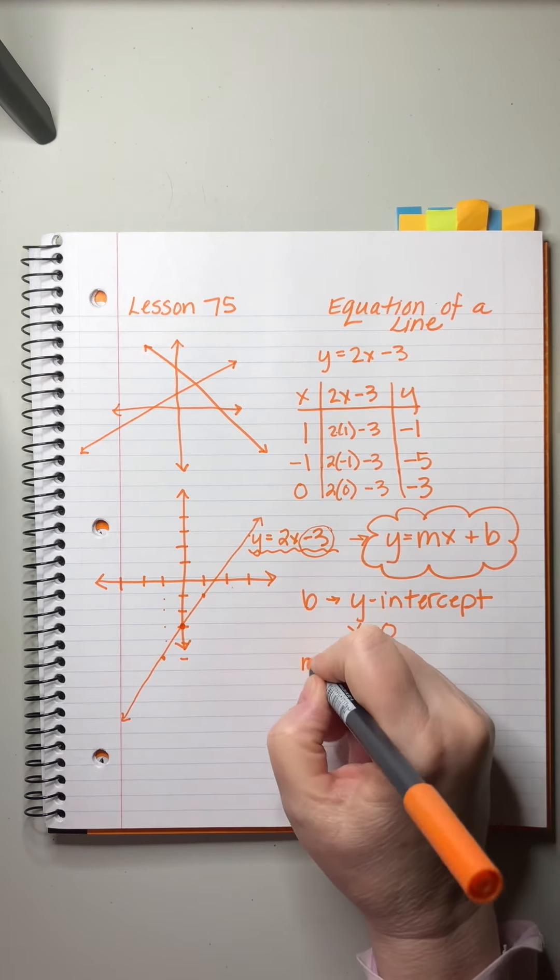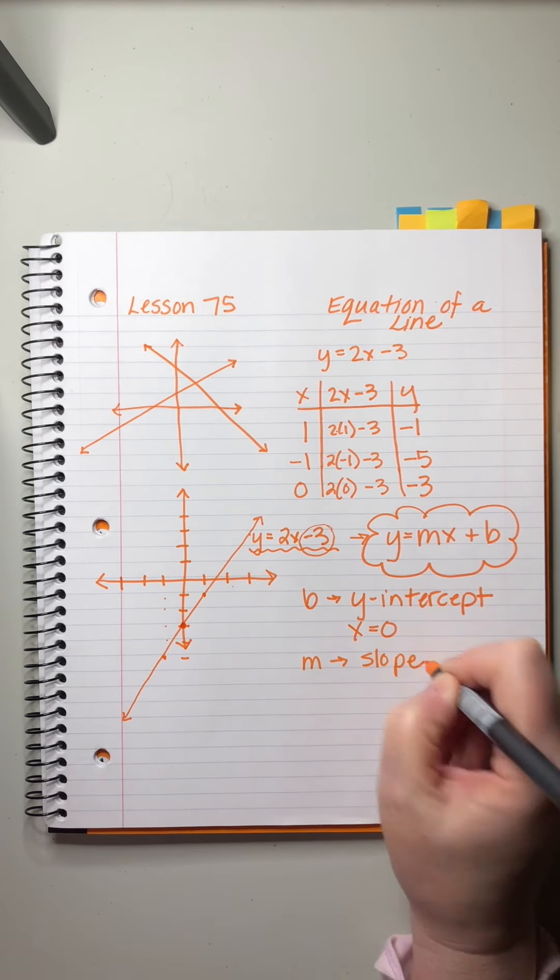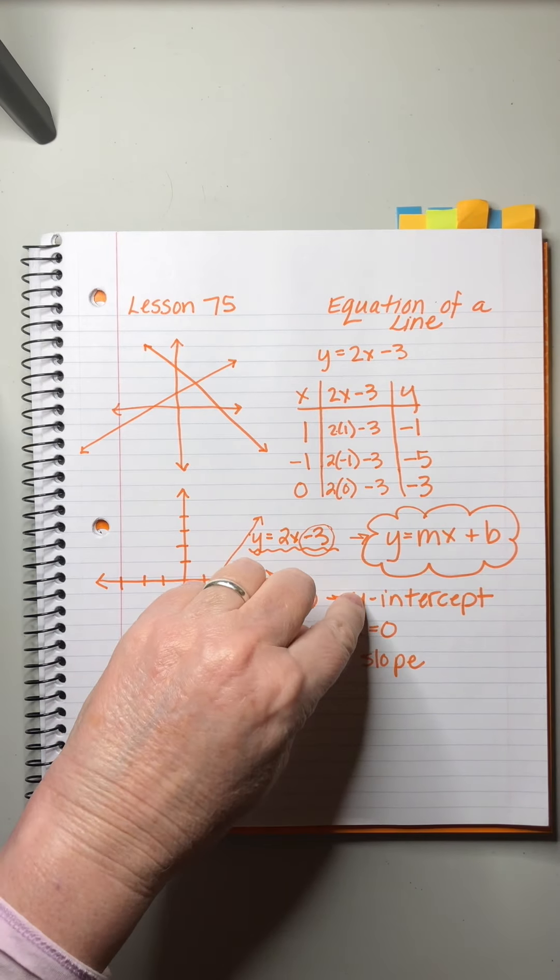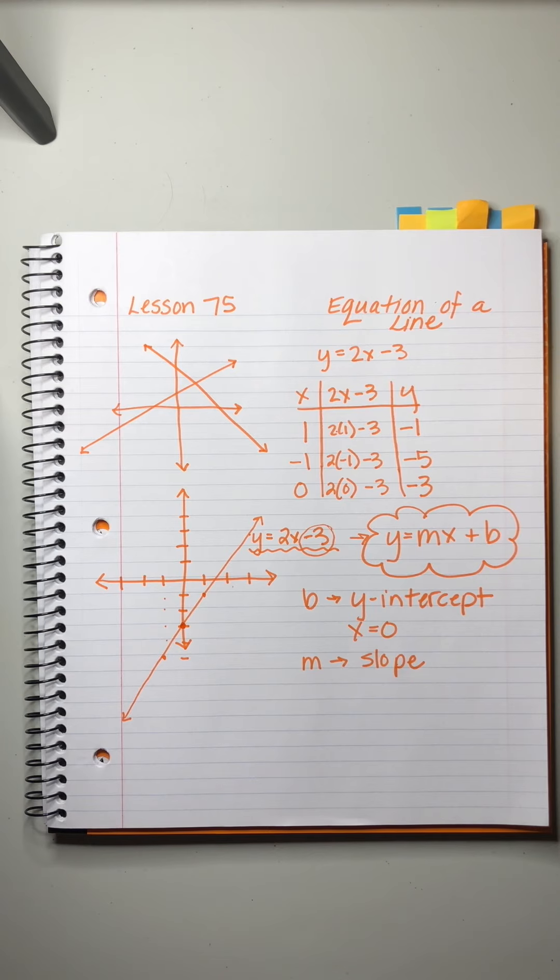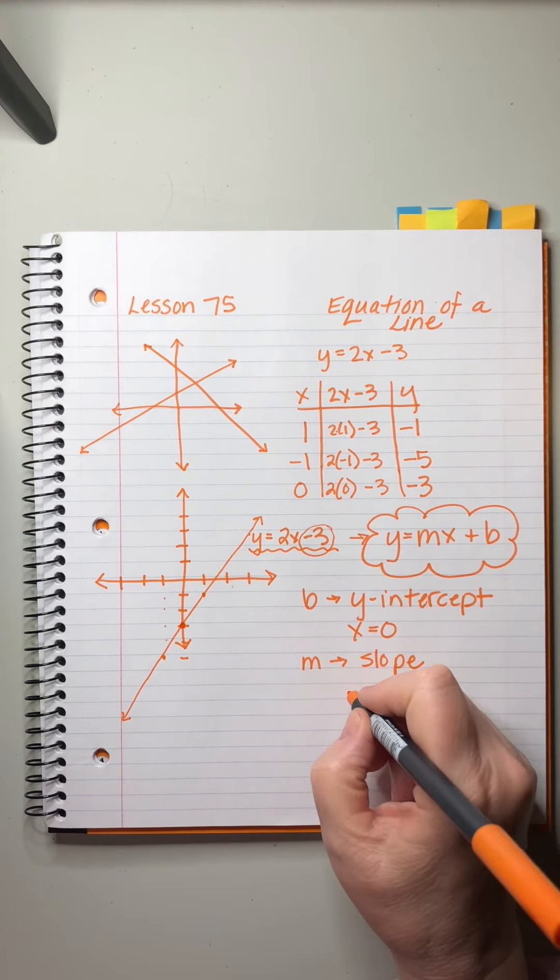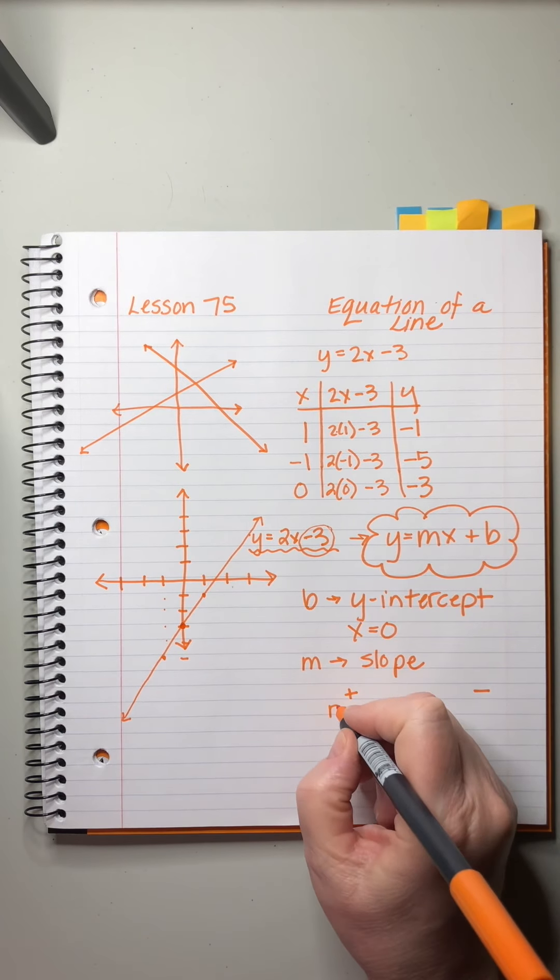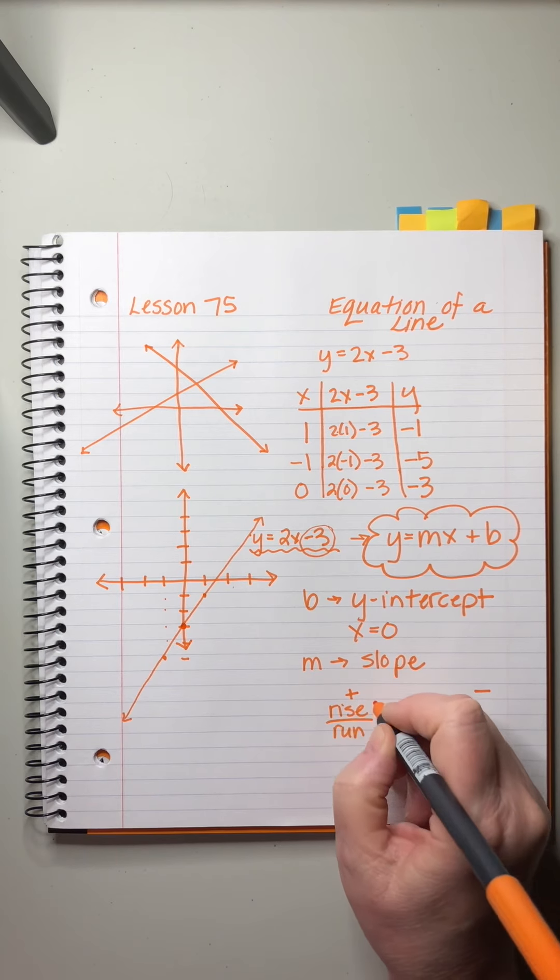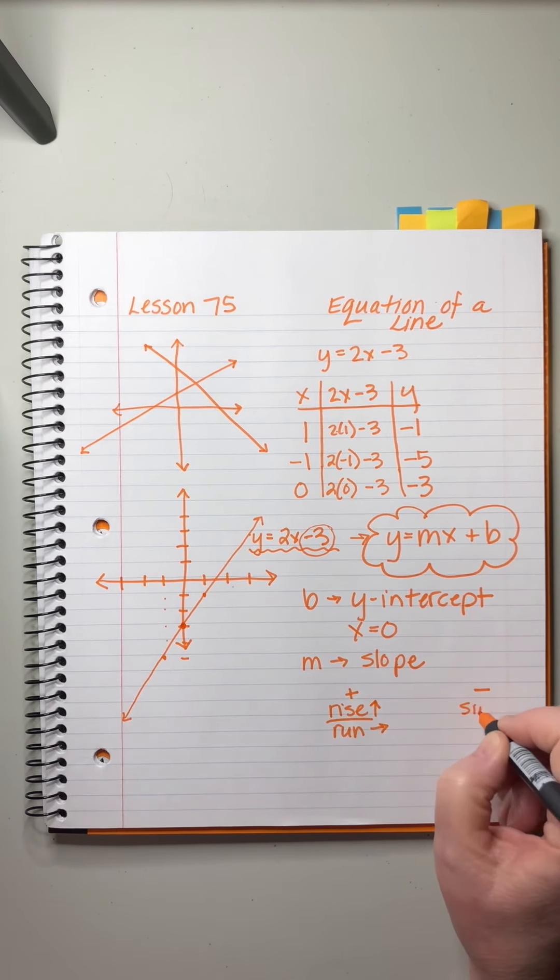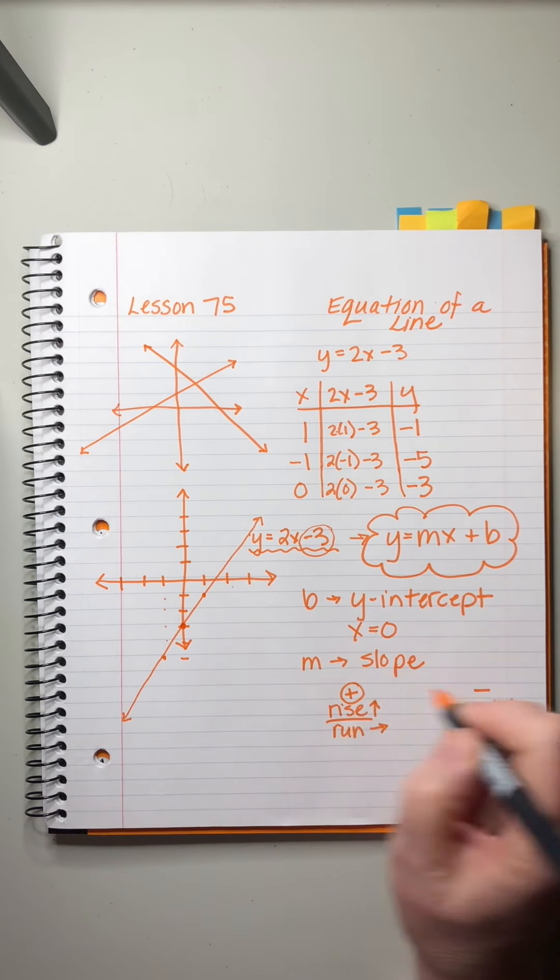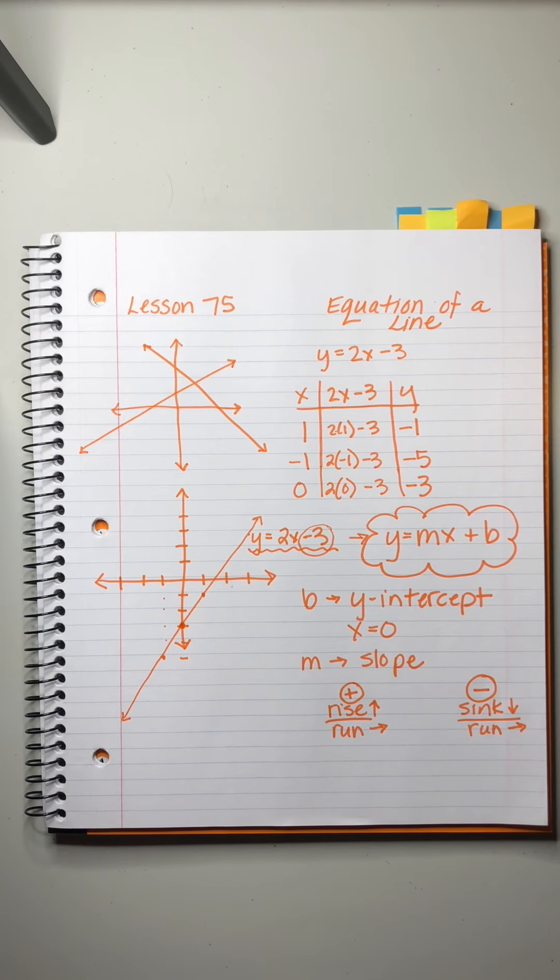Now, so that's the b. m is called the slope. I think of the slope as being a treasure map that allows you to go from the y-intercept to another point on the line and it gives you a way to start drawing. The slope can be either a positive slope or a negative slope depending on whether there's a minus sign in front of this or not. A positive slope, and this will make sense to you in a minute. We call the rise over the run. The negative slope is the sink over the run. Now, copy that down and then I'll tell you what the heck I'm talking about.